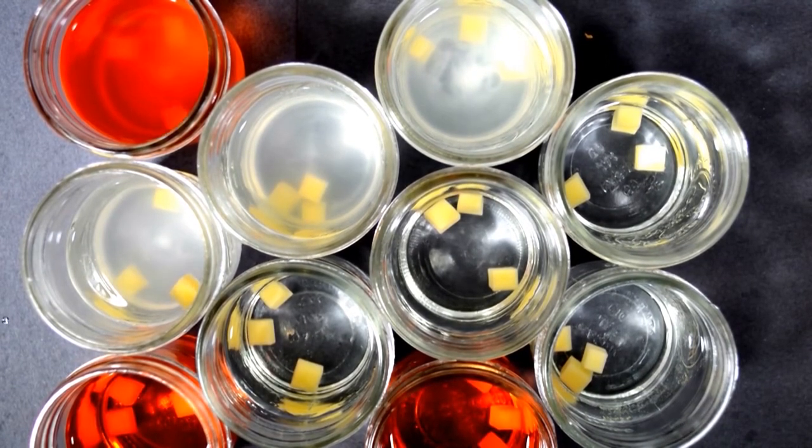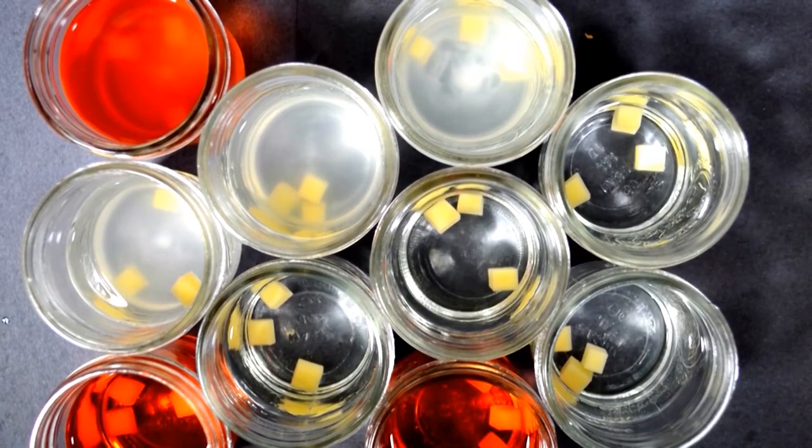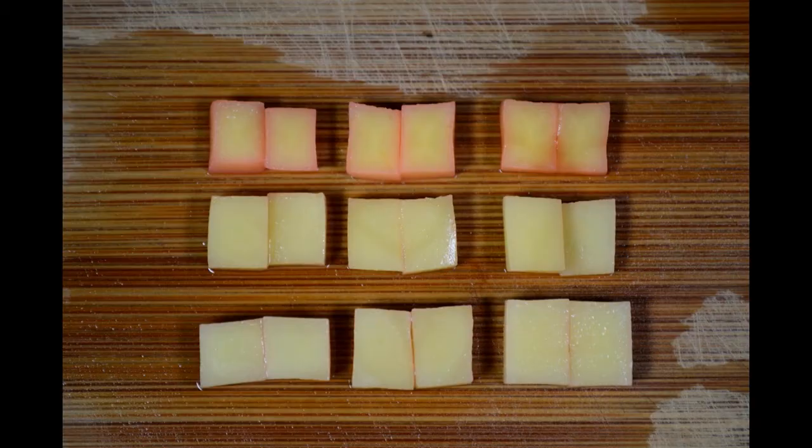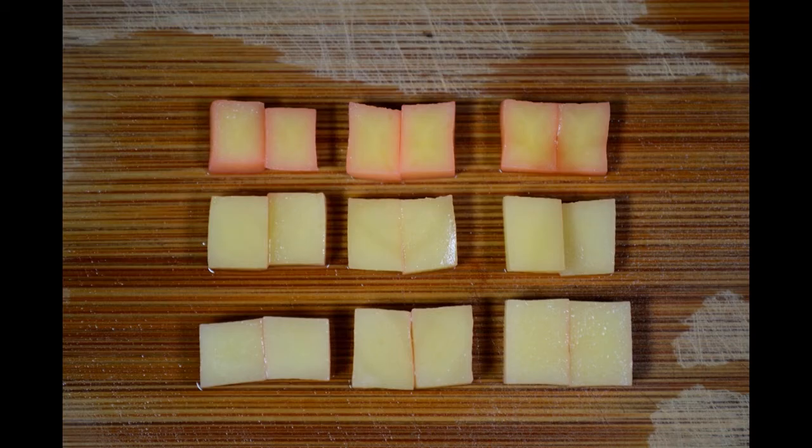We then fished out the cubes out of the red dye and we put them on a cutting board and we cut them open. The ones at the top up here are actually the ones in the salt, in the center the sugar, and the bottom the water, and you can see how things have changed.